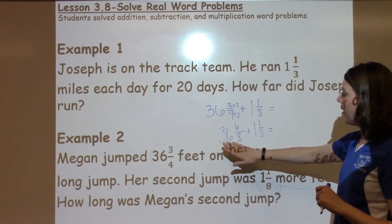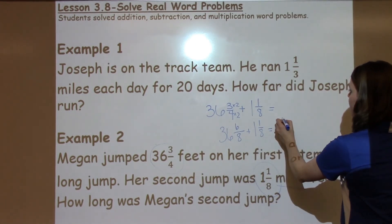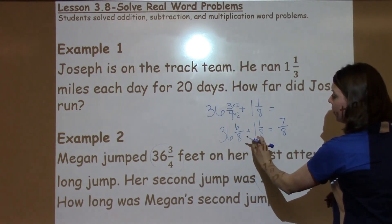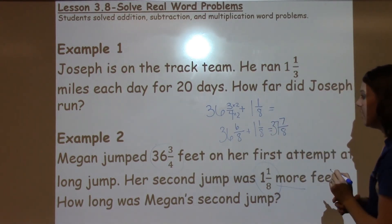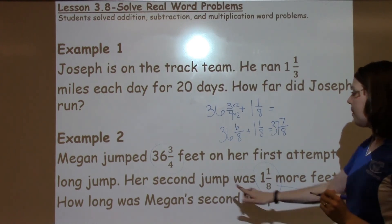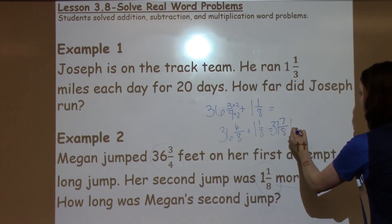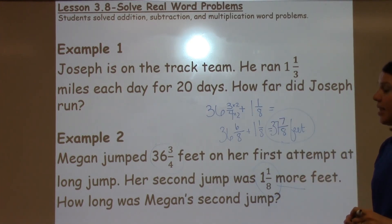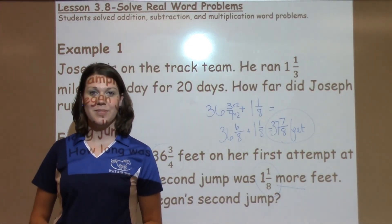Now I just need to go ahead and add my fractions. I've got 6 eighths plus 1 eighth, which is 7 eighths. And then I've got my 36, which is my whole number, plus my 1 whole, is going to be 37 and 7 eighths. I need to go back and look for my label and label this feet. Circle my answer. How far Megan's second jump was — 37 and 7 eighths feet. If you have any questions about this math lesson, see your math teacher.